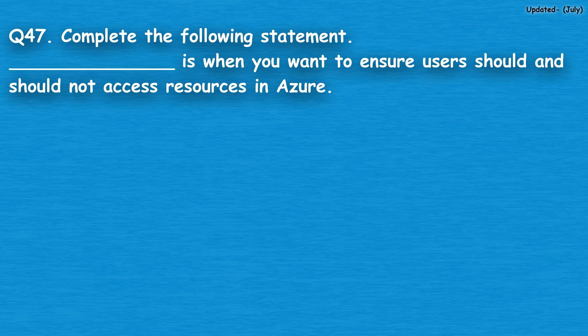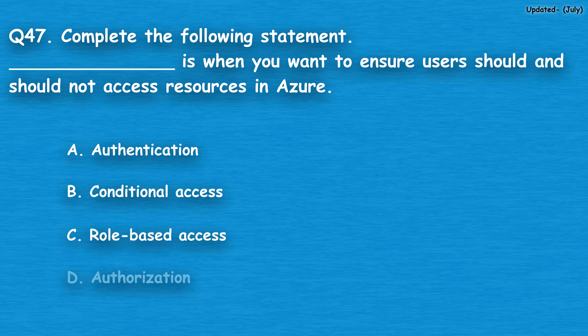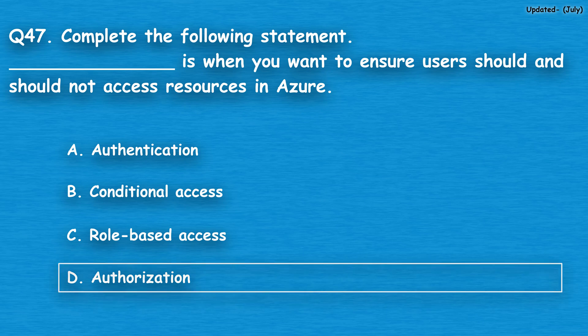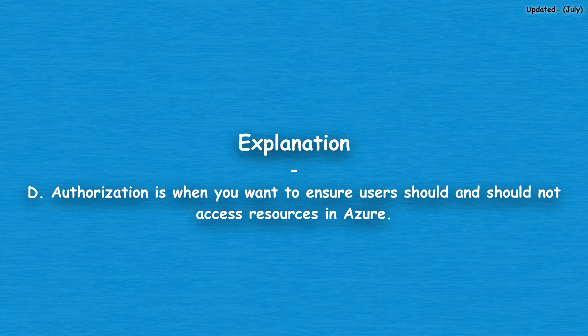Question number 47: Complete the following statement — dash is when you want to ensure users should and should not access resources in Azure. Option A: authentication, option B: conditional access, option C: role-based access, option D: authorization. The correct answer is option D, authorization. Authorization is when you want to ensure users should and should not access resources in Azure.